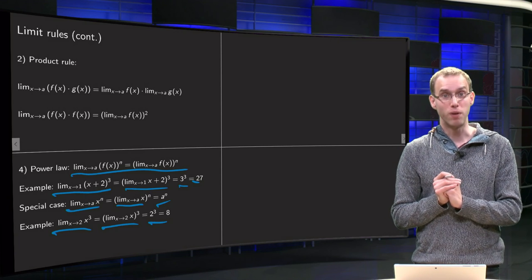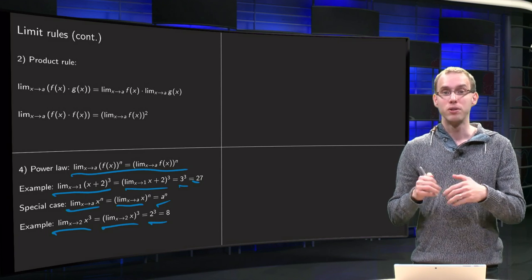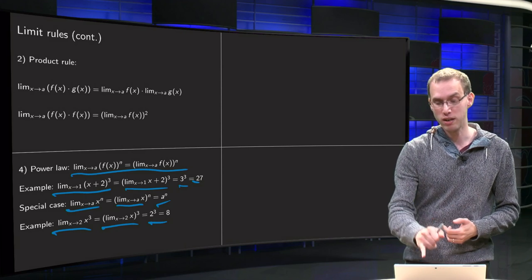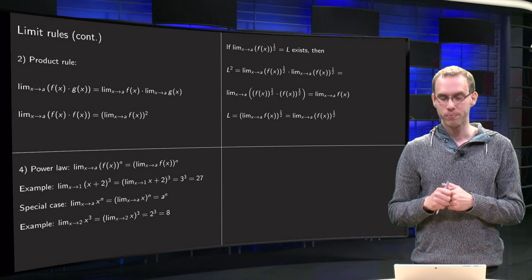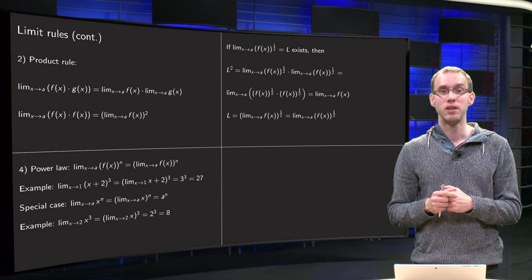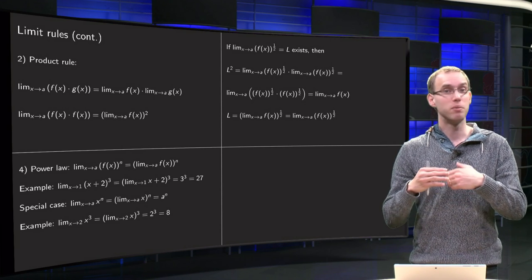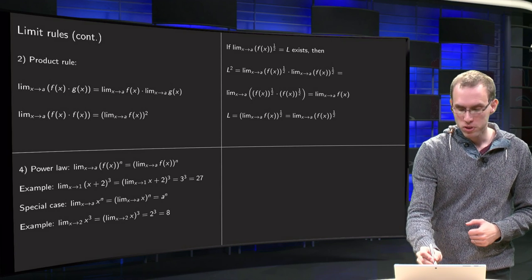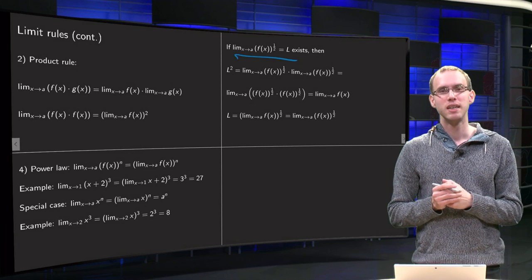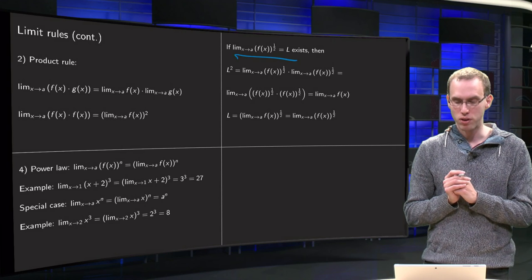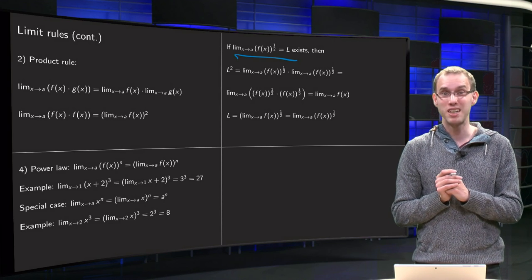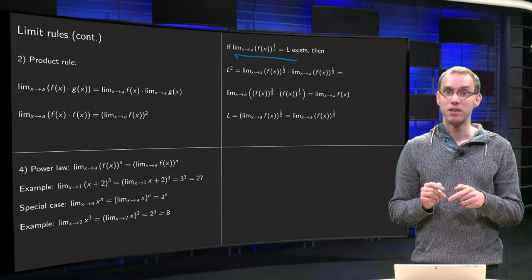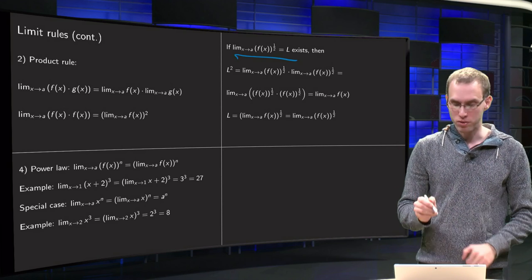Now we have the power law. The inverse of the power law is the root law, because roots are the inverses of powers. Suppose the limit as x→a of the square root of f equals L — suppose this limit exists.